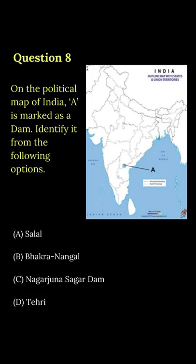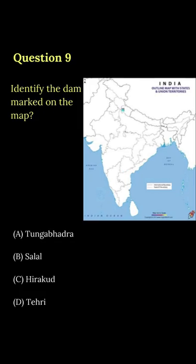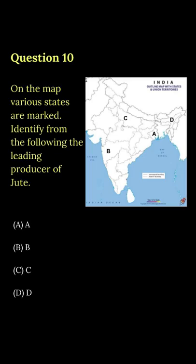This map's answer is Nagarjun Sagar Dam, which is in Karnataka. In the next map you are seeing, the dam shown is in Uttarakhand. In the third map question, Jute's leading producer is Bengal, so option number A is the answer.